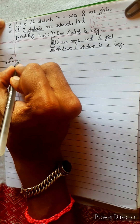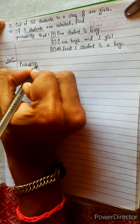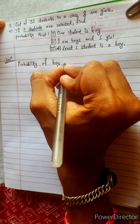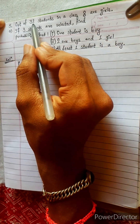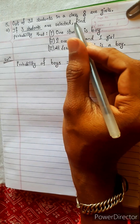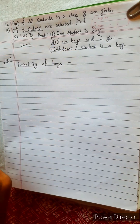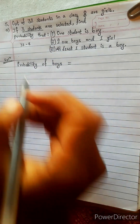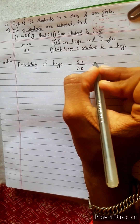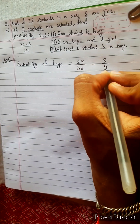Let's start from probability. First of all, let's find the probability of boy. How many boys are there? If 8 are girls, then how many will be boys? 32 minus 8 equals 24. So the favorable case will be 24 divided by 32, and this is 3 by 4. Probability of boy is 3 by 4.